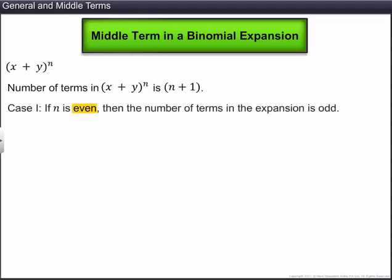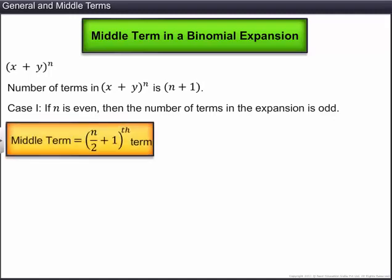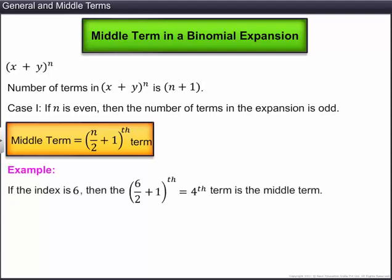If n is even, then n plus 1 is odd. That is, the number of terms in the expansion is odd. In this case, there will be only one middle term, which is the n upon 2 plus 1th term. For example, if the index is 6, then the number of terms in the expansion is 7.